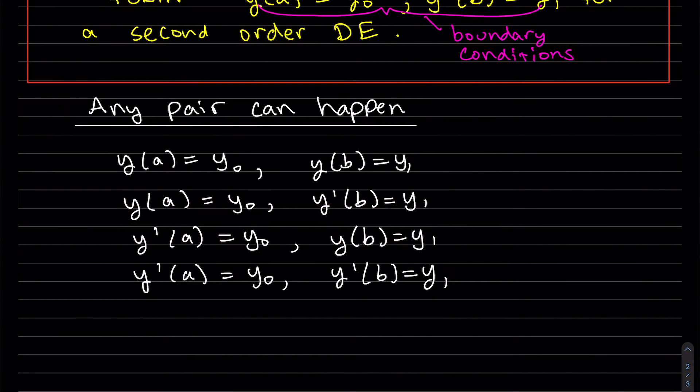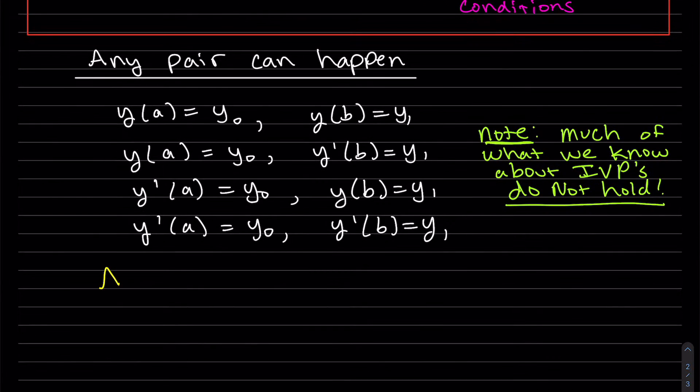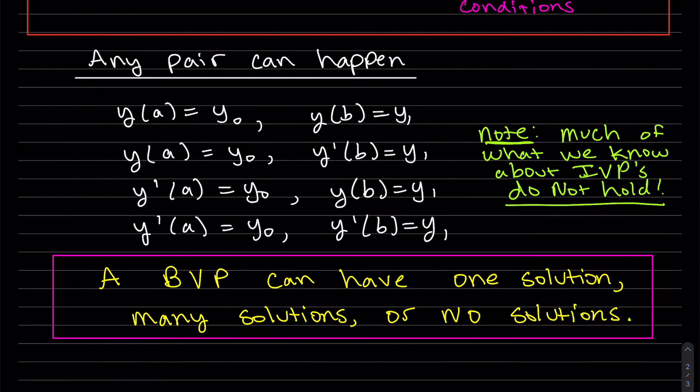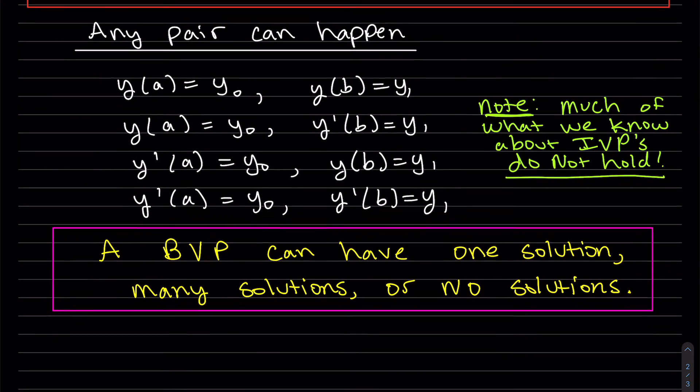An important note right here is much of what we know about the initial value problems, they don't hold true here. That uniqueness is gone. So a boundary value problem can have one solution or many solutions or no solutions. We just don't know. Let's look at some examples.